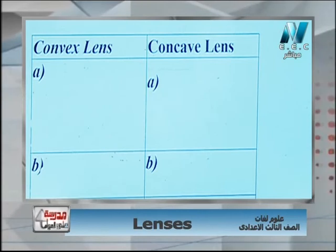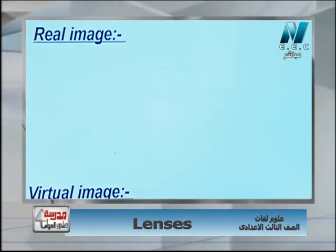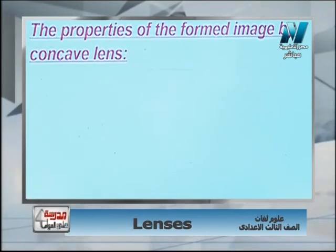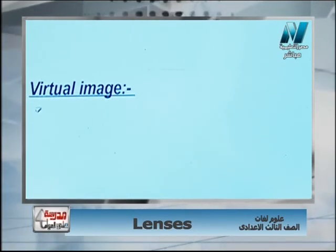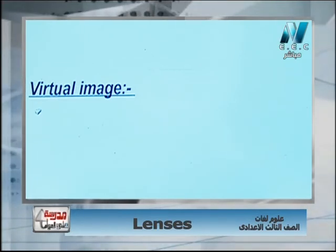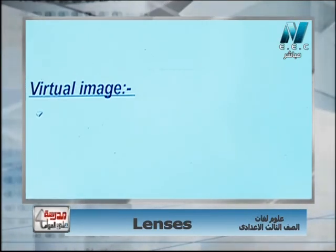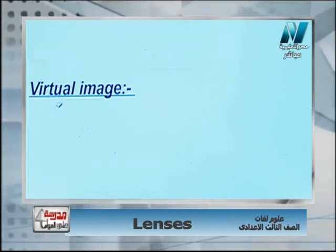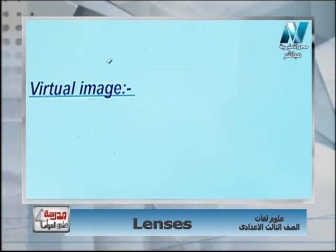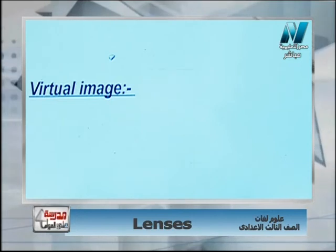A review from the previous episode: a real image can be received on a screen and is formed by the intersection of refracted rays. A virtual image cannot be received on a screen and is formed by the intersection of extensions of refracted rays.